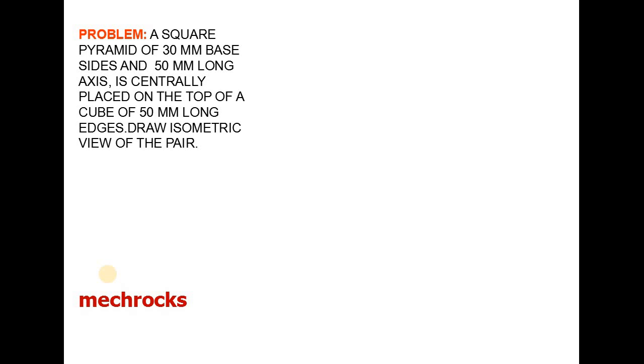Hi friends, welcome to Macrox. Today we will discuss the isometric view of the given object. First we see the problem. A square pyramid of 30mm base sides and 50mm long axis is centrally placed on the top of a cube of 50mm long edges. Draw isometric view of the pair.